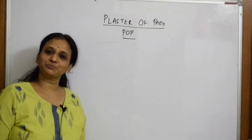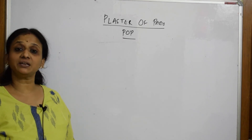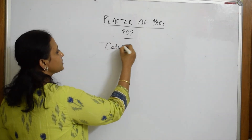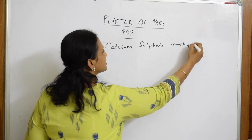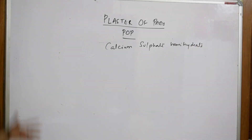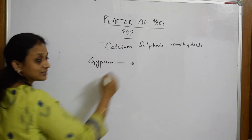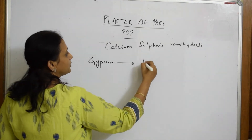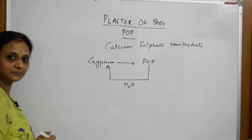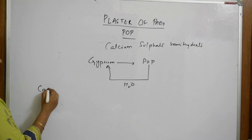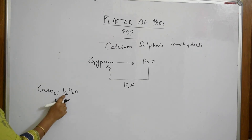Now let's learn about Plaster of Paris (POP). It is also called calcium sulfate hemihydrate — CaSO₄·½H₂O. Hemihydrate means half a water molecule. If you take gypsum and heat it, it forms POP; if you add water back to POP, it forms gypsum again.